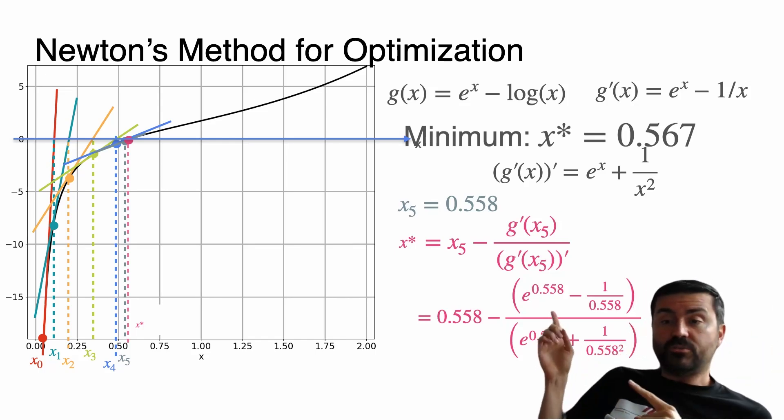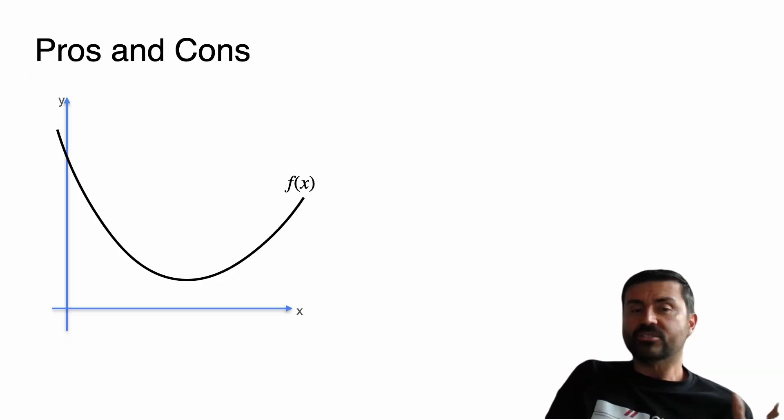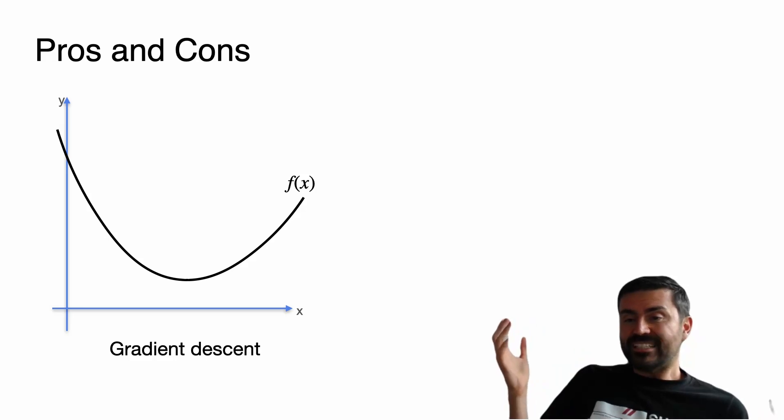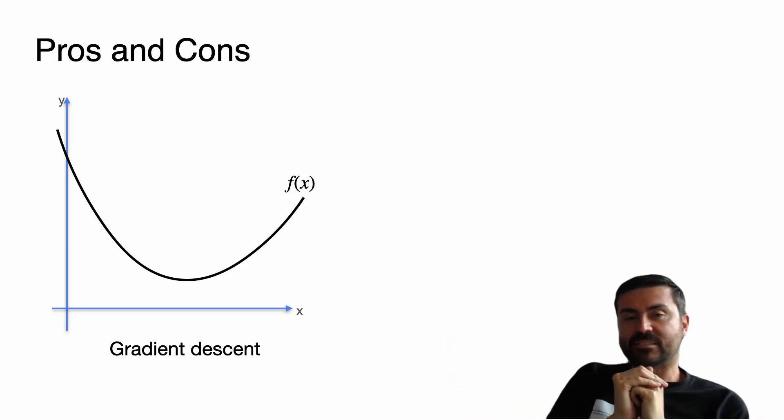So you may be wondering when do we use Newton's method and when do we use other methods to minimize a function? Well here are some pros and cons. I'm going to compare it with gradient descent, which is the other method that we use a lot to find minimum and maximum of functions.